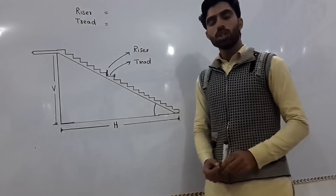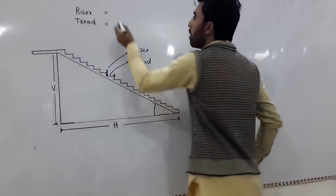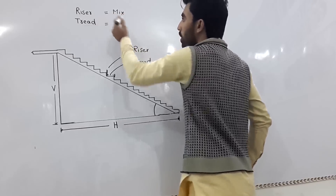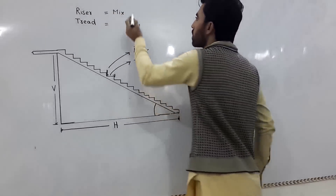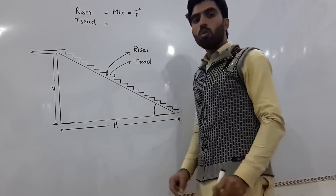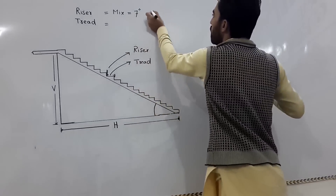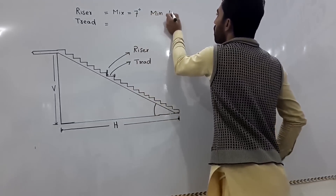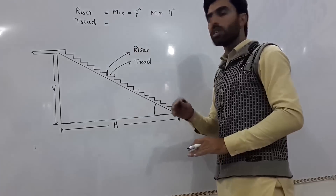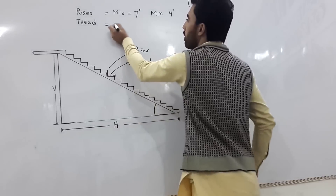I will show you the maximum and minimum values for the riser. The maximum riser can be seven inches, and the minimum riser must be four inches. So don't go below four inches and don't exceed seven inches — that gives you the two boundary points: max is seven inch and min is four inch.